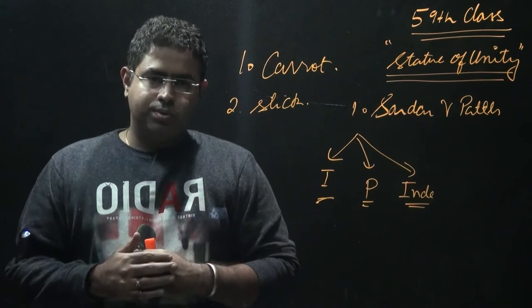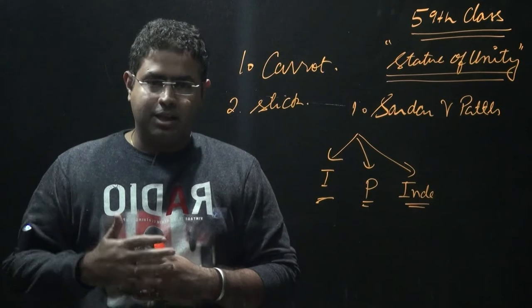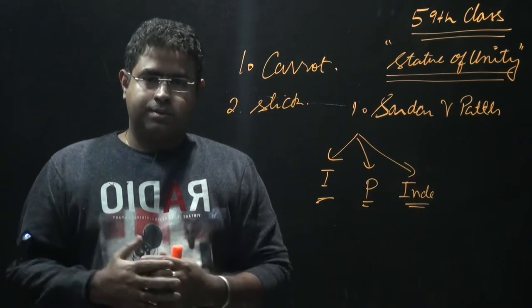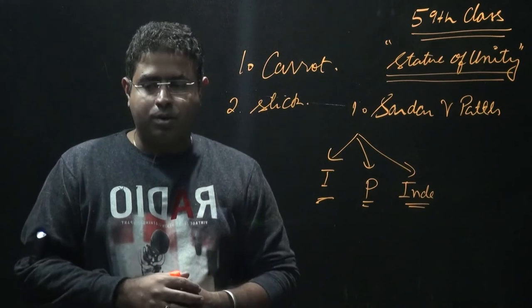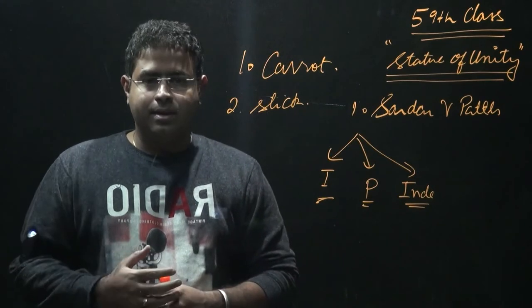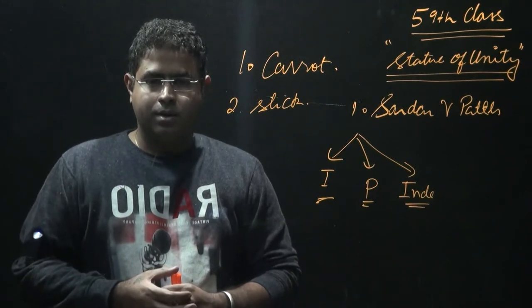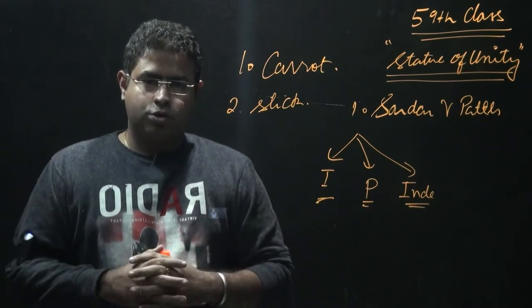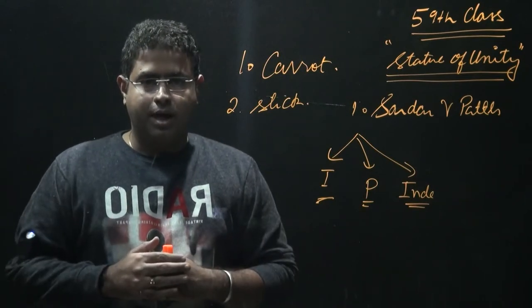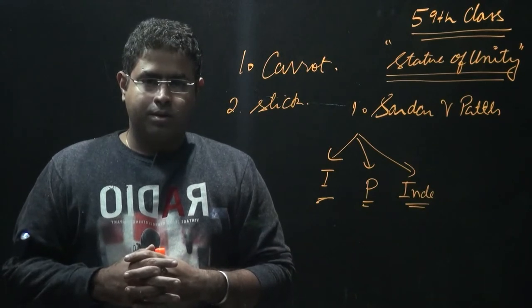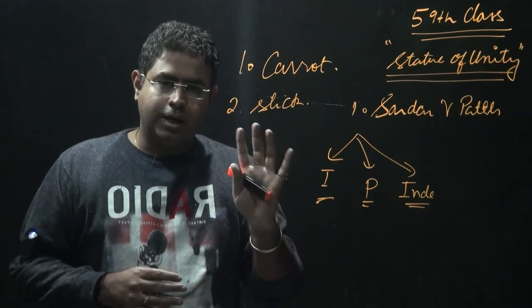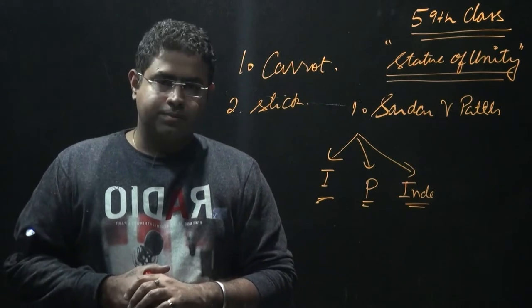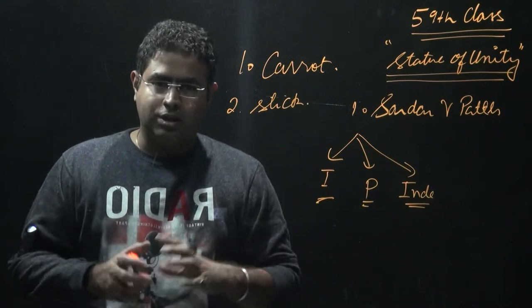So when it comes to these princely states, he had asked all these princely states that their privileges, their perks, their alliances and their respect and recognition, that all will be maintained even in independent India. But what they need to do was just to sign an instrument of accession with India. Now what is meant by instrument of accession? Instrument of accession is a legal document through which a princely state offered India sovereignty over four important subjects: defense, finance, communication and foreign relations.